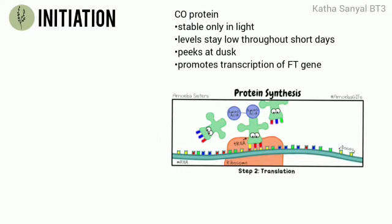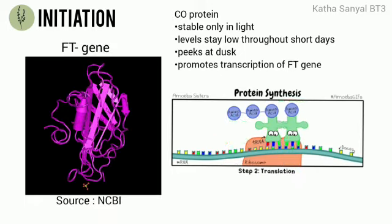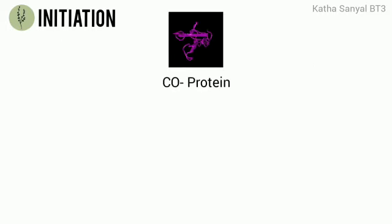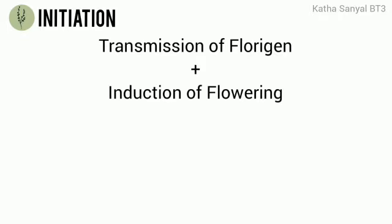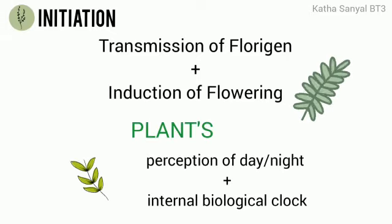CO protein promotes transcription of another gene called Flowering Locus T (FT). By this mechanism, CO protein may only reach levels capable of promoting FT transcription when exposed to long days. Hence, the transmission of florigen and thus the induction of flowering relies on the comparison between the plant's perception of day or night and its own internal biological clock.